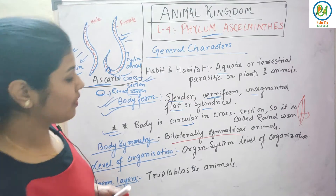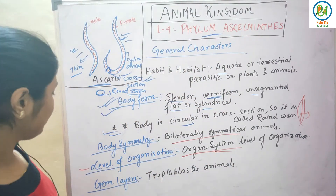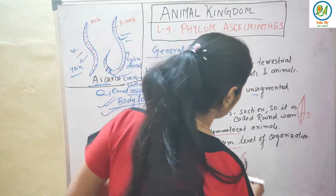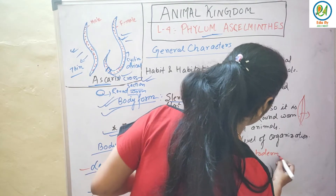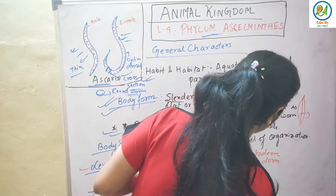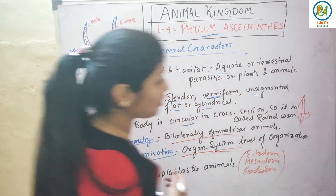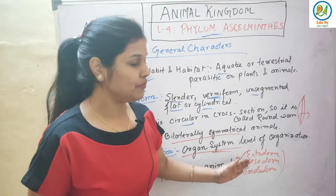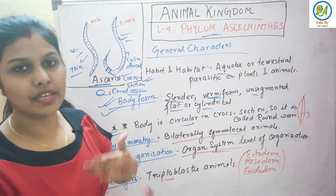Next is level of organization — organ system level of organization. Next is germ layers: they are triploblastic, meaning three germ layers are present. The body is developed from three germ layers: ectoderm, mesoderm, and endoderm. So they are known as triploblastic.